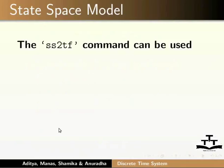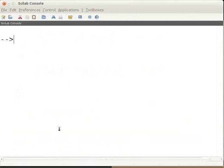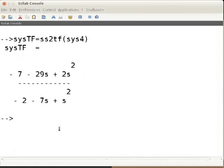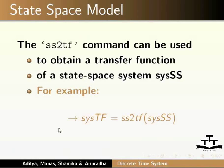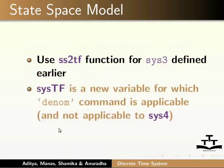The ss2tf command can be used to obtain a transfer function of a state space system. On the Scilab console, type clc to clear it, then type sysTF = ss2tf(sys4) and press enter. You will see the output. Use the ss2tf function for sys3 defined earlier. Note that sysTF is a new variable for which the denom command is applicable, but it is not applicable to sys4 as it is in state space form.